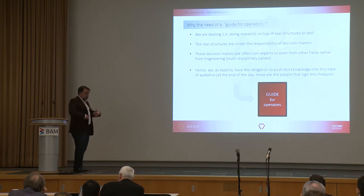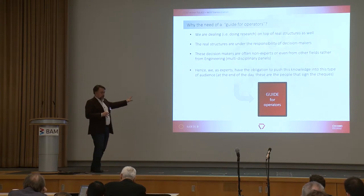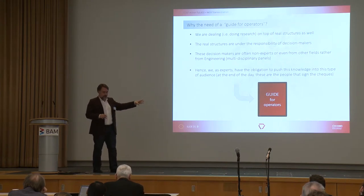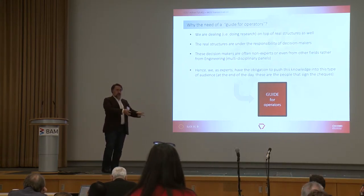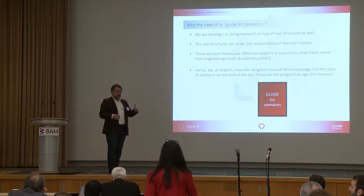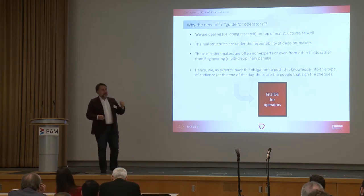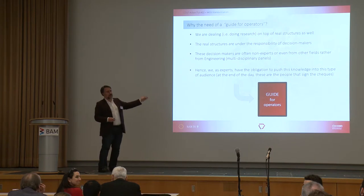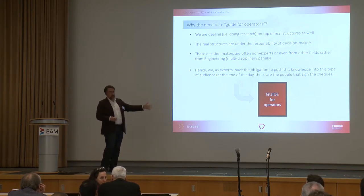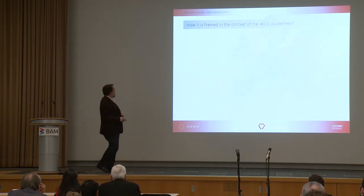As we act as experts — this community, this network — I think we should also keep thinking that at the end, all these structures that we aim to apply the value of information theory to are in the field. We have an obligation to push a document that is written to a level that is for a non-expert audience, such that perhaps an economist can understand something about it, or a lawyer, or whatever. So that was the fundamental idea of producing this guide for operators, on top of the two previous guidelines that have been presented by Sebastian and Dimitris.